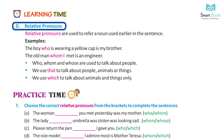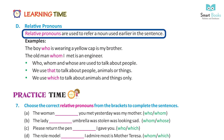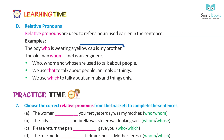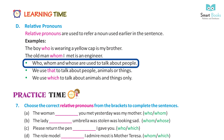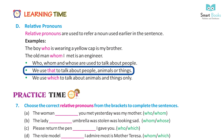Learning time — relative pronouns. Relative pronouns are used to refer to a noun used earlier in the sentence. Example: the boy who is wearing a yellow cap is my brother. The old man whom I met is an engineer. 'Who,' 'whom,' and 'whose' are used to talk about people. We use 'that' to talk about people, animals, or things. We use 'which' to talk about animals and things only.